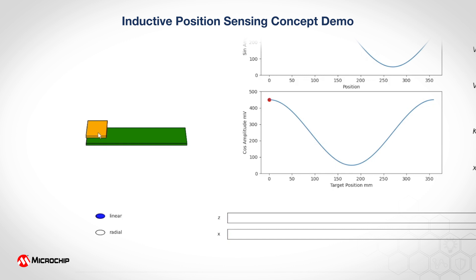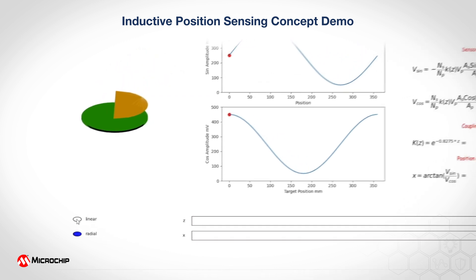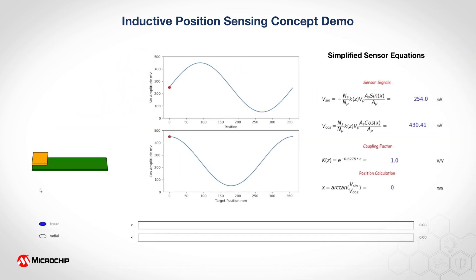We support both the linear configuration of the sensor design as well as the radial configuration of the sensor design. By using this slider tool on the bottom we can change the location of the metal target with respect to the sensor on the bottom and that's exactly what we're figuring out later. For linear mode, as we drag through this x-axis we'll see that the metal target goes from left to right.